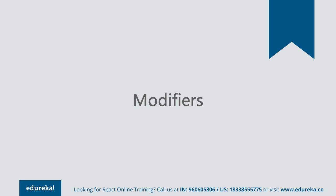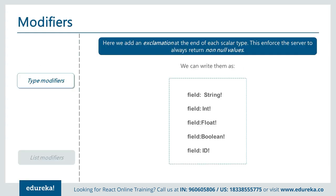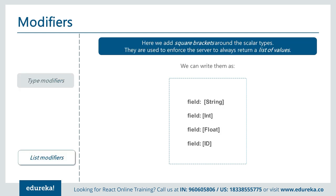Modifiers in GraphQL are used to specify what the server must return. We have type modifiers and list modifiers. With a type modifier, you add an exclamation mark at the end of each scalar type, which enforces the server to always return a non-null value — whether string, float, boolean, or ID. With a list modifier, you put square brackets around the scalar type, enforcing the server to always return a list.